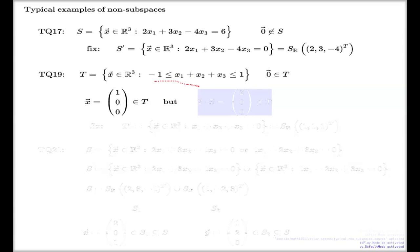But if I double that vector, if I scale it with a scalar 2, that will be the vector 2, 0, 0, and that is a vector not in T. And that's why, because T fails the third criterion of the subspace theorem, being closed on the scaling, it's not a subspace.